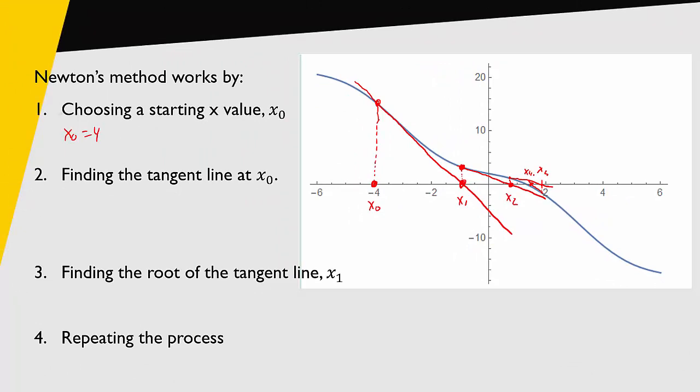But now we need to write some equations down to actually calculate these values and find a way to program it. So we basically started at x₀. We need to find a tangent line at x₀. We need an equation for that. In general the equation of a line looks like y - y₀ equals m the slope times x - x₀.